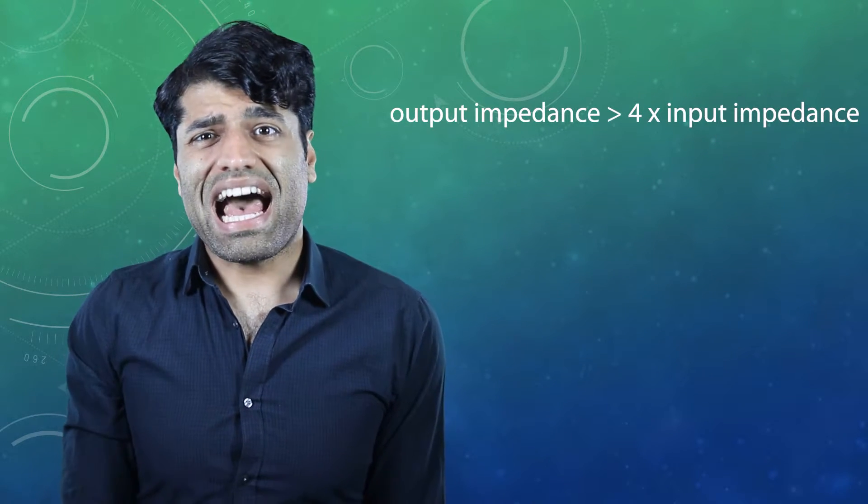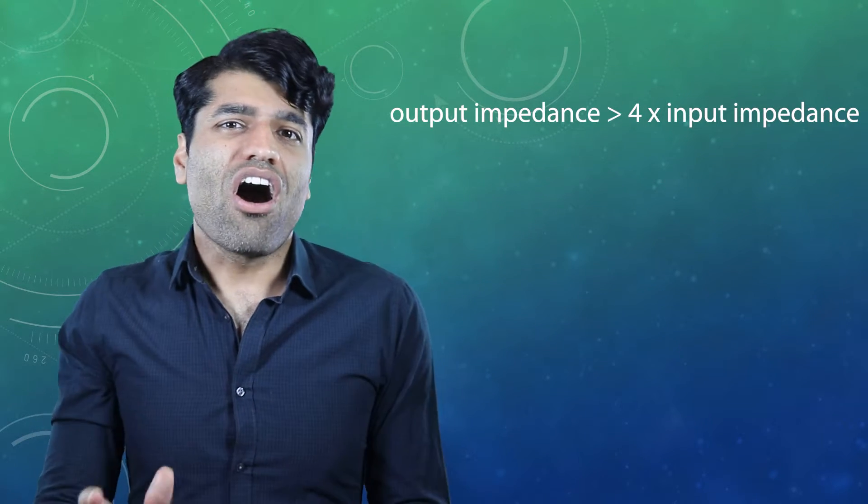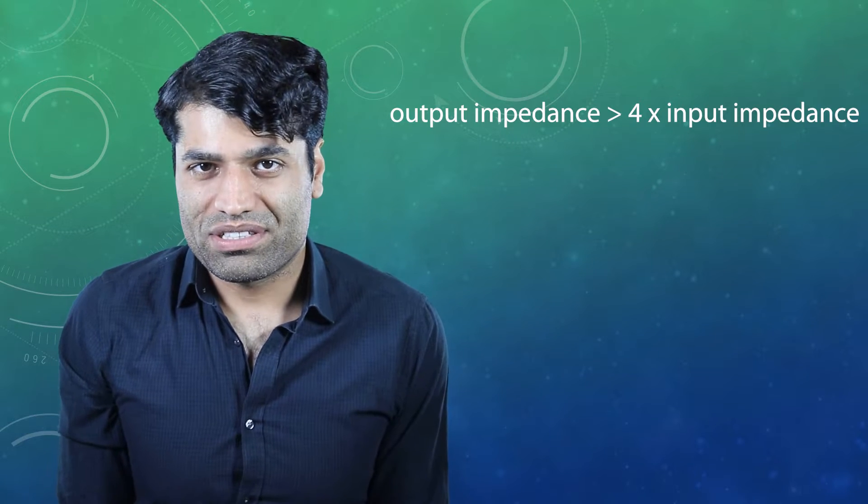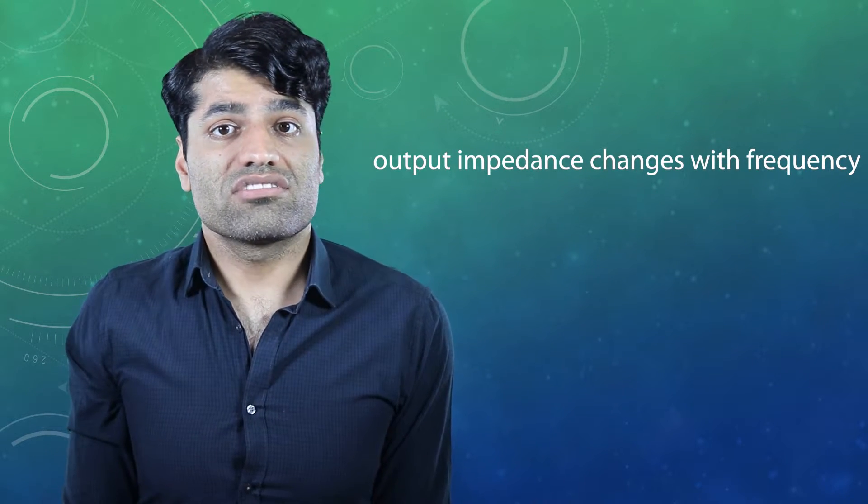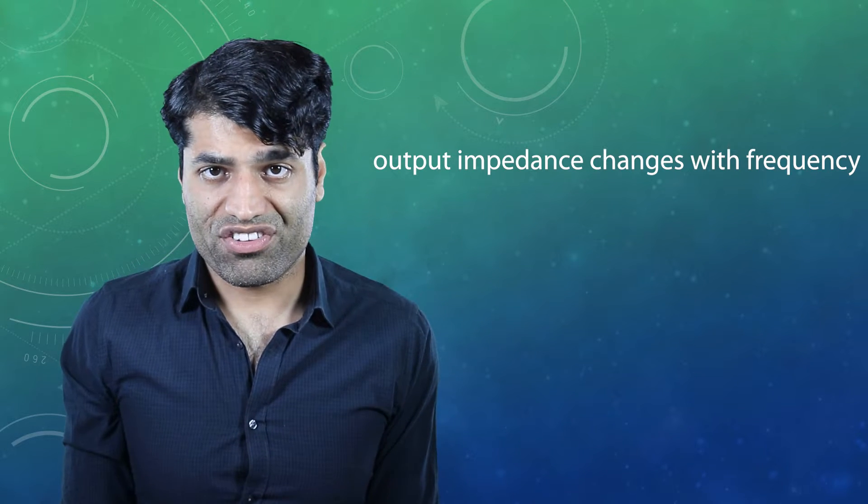All the electronic devices that generate an AC voltage have an output impedance. The output impedance should be at least four times higher than the input impedance. Microphone output impedance is not a constant value and it changes with the frequency.